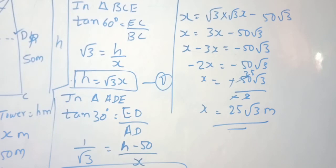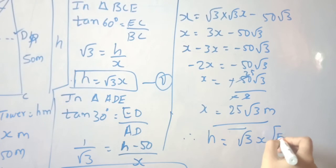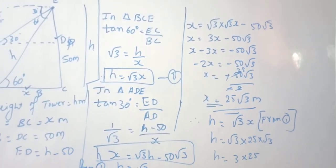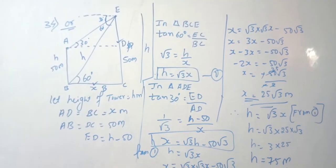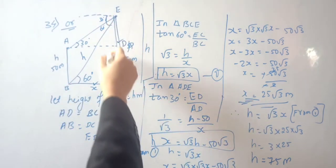Now find the height of the tower h. From equation 1, h = root 3 × x. Substituting x = 25 root 3: h = root 3 × 25 root 3 = 25 × (root 3 × root 3) = 25 × 3 = 75 meters. So h = 75 meters. The distance between the building and tower is 25 root 3 meters and the height of the tower is 75 meters.